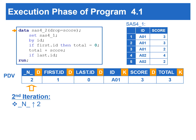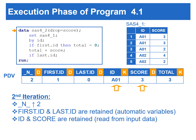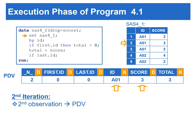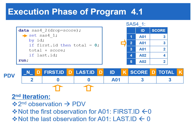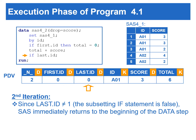At the beginning of the second iteration, _N_ is incremented to 2. Both first.id and last.id are retained because these are automatic variables. ID and score are retained because these two variables are from the input data set. Total is also retained because it is created by using the sum statement. All variables in the PDV retain their values at the beginning of the second iteration, though the reasons for retaining the values are different. The set statement copies the second observation to the PDV. Since the second observation is not the first observation for A01, first.id is set to 0. This is also not the last observation for A01, so last.id is also set to 0. Since first.id does not equal 1, there is no execution for the IF-THEN statement. Total is accumulated with the value from the score variable. Since last.id does not equal 1 in the subsetting IF statement, SAS again returns to the beginning of the data step.